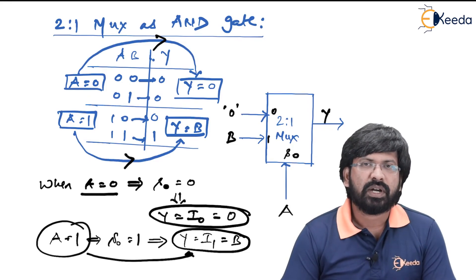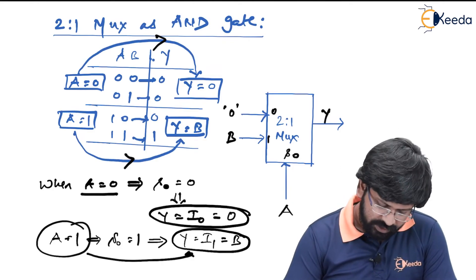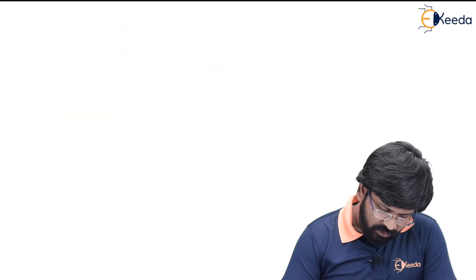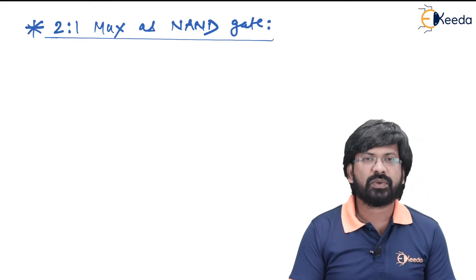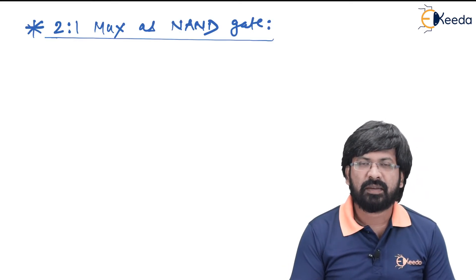So we have understood how to use 2-to-1 multiplexer as NOT gate, AND gate, as well as OR gate. With these three examples, it is crystal clear that 2-to-1 multiplexer can be used as a universal logic circuit. We shall see one more circuit: let us use 2-to-1 multiplexer as NAND gate, using the similar method.